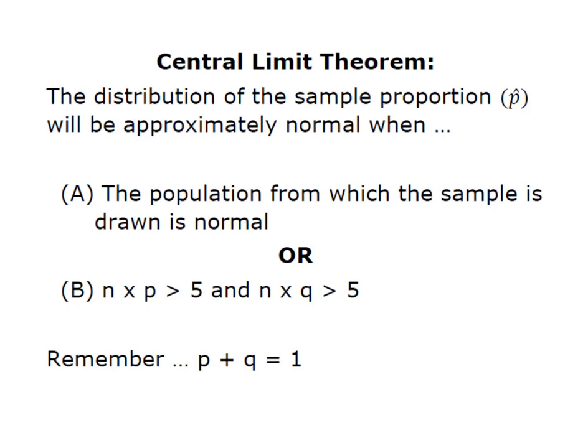then we're able to apply the central limit theorem to sample proportions when n times p is greater than 5, and n times q is greater than 5. Remember, n is your sample size, p is your probability of success, q is p's evil twin, it's the probability of failure.